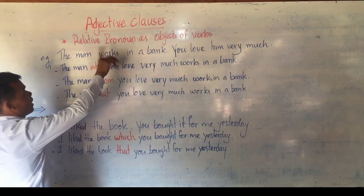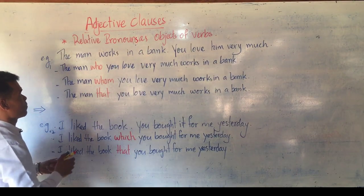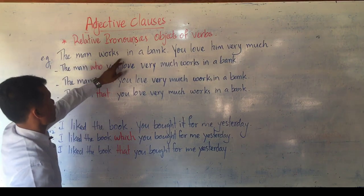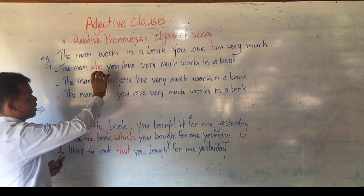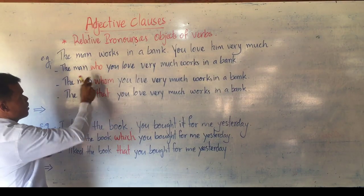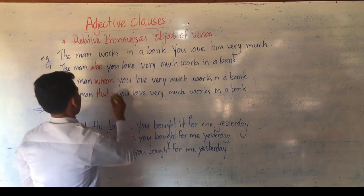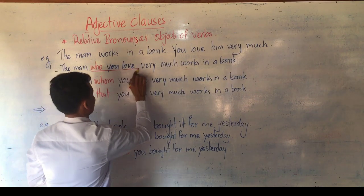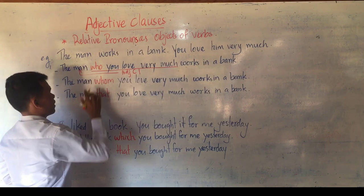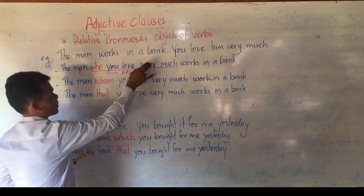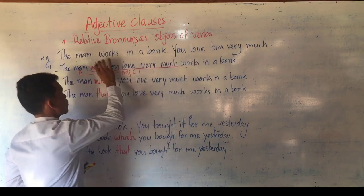So look at the box with me. Adjective clause — relative pronoun as an object of verbs. Example: 'The man works in a bank. You love him very much.' So we can write the adjective clause like this: 'The man who you love very much works in a bank.' The adjective clause is 'who you love very much.' Who here is the object because who replaces him. Him is object, that's why who is also the object.